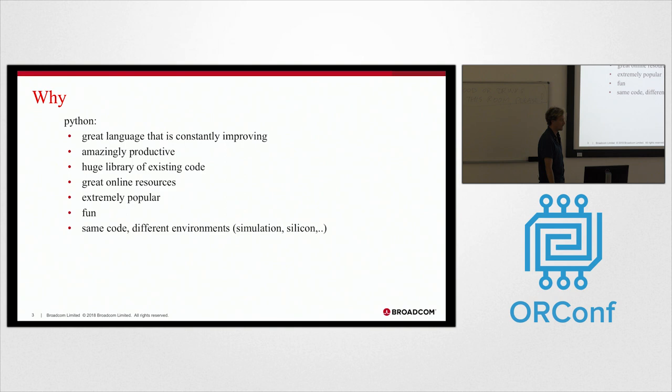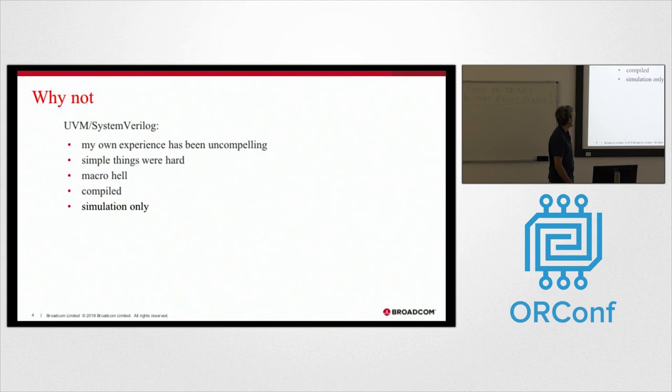You can use the same code in different environments. So you can write your chip configuration code in Python, run it with CocoTB in simulation, and then when your chip gets back, you can run it in the lab against silicon.